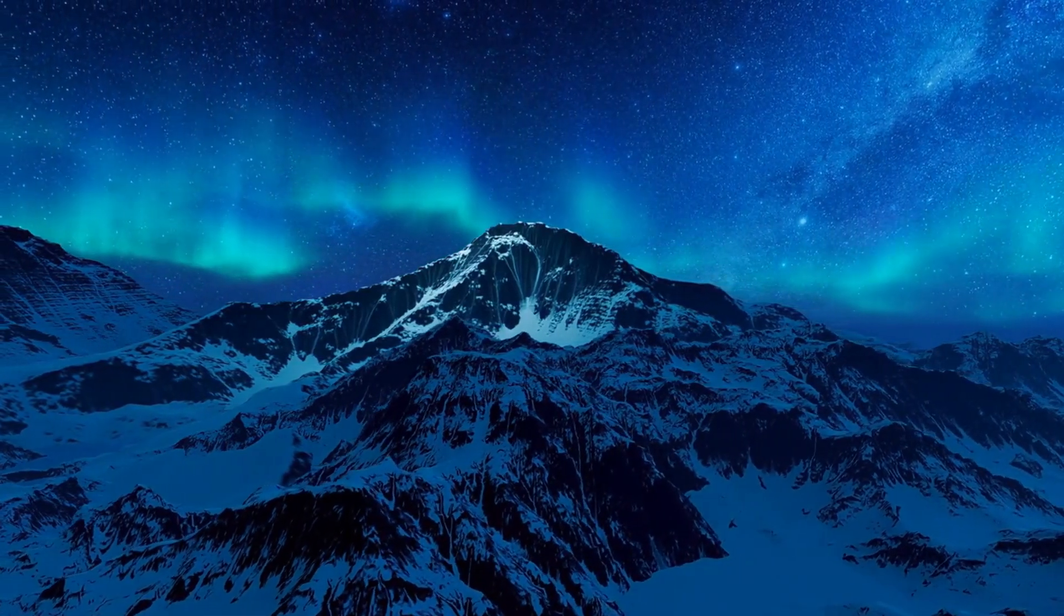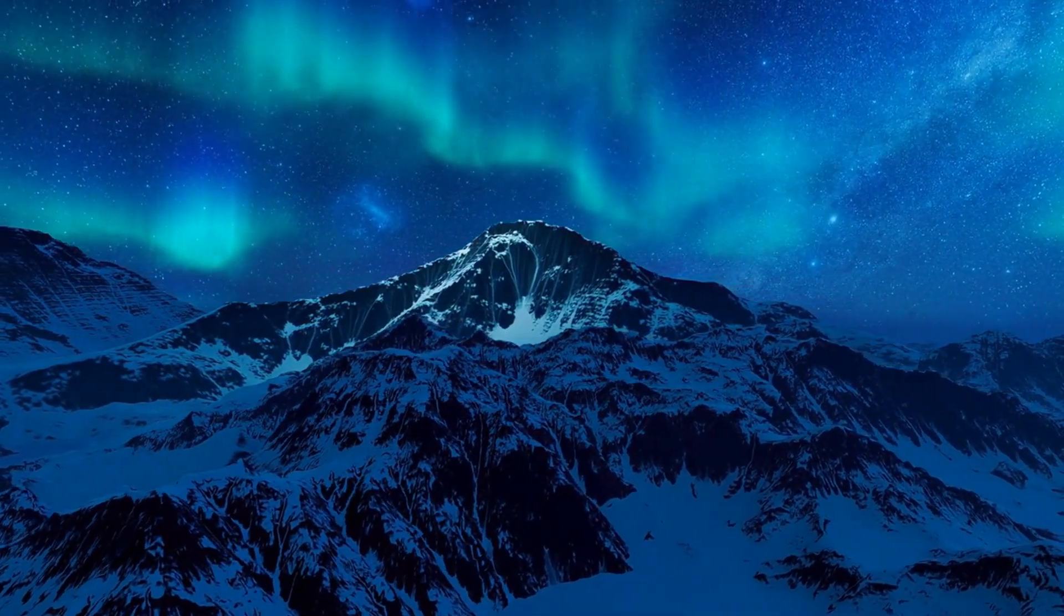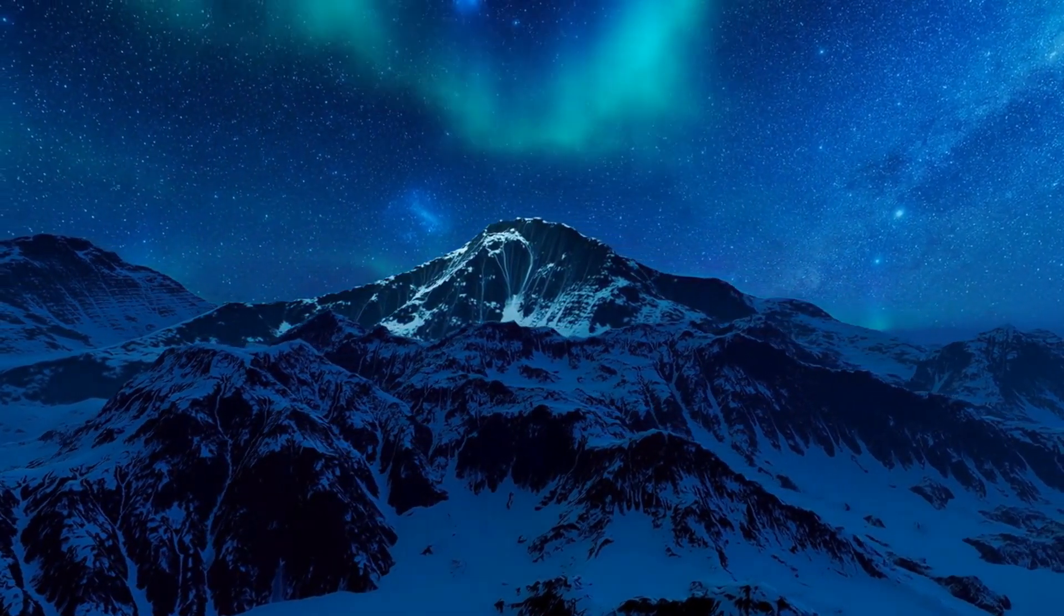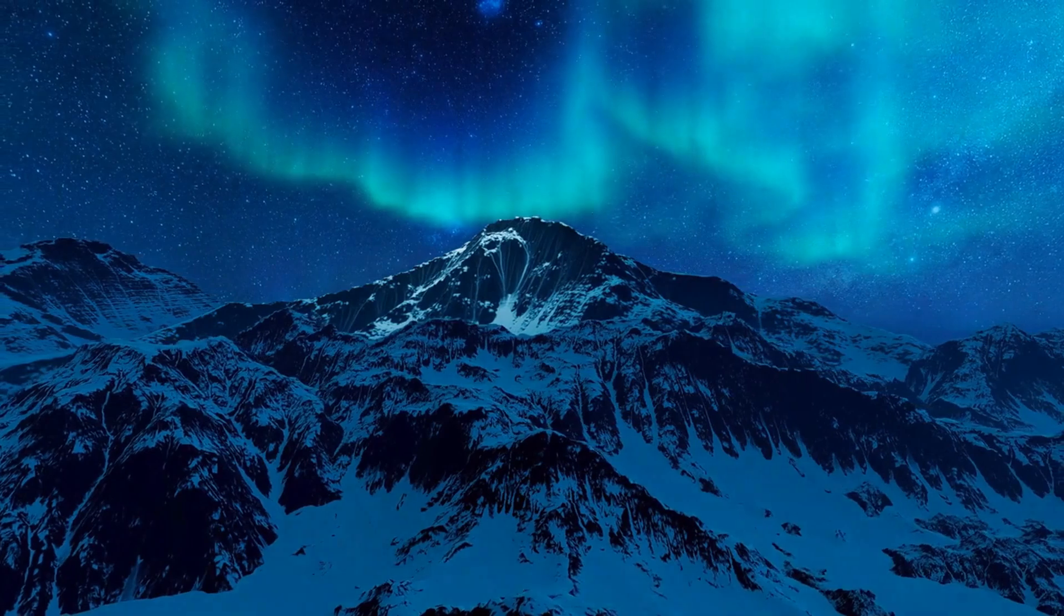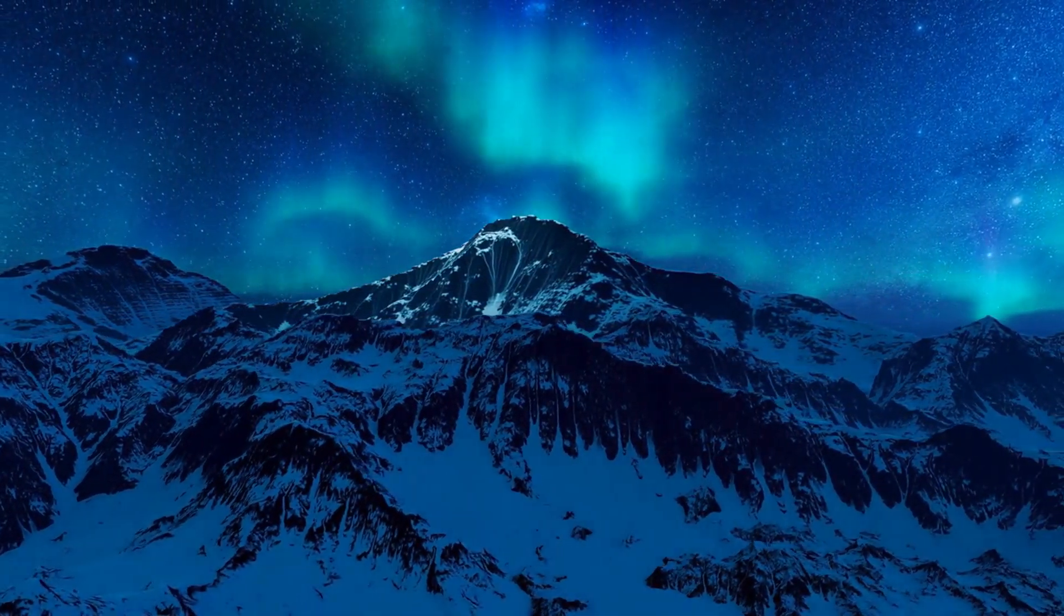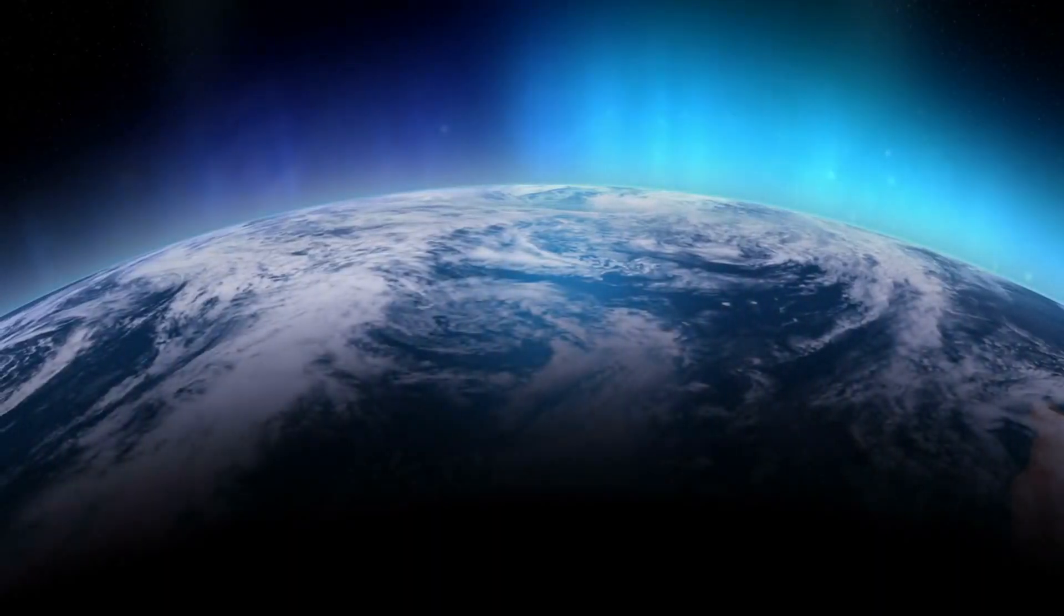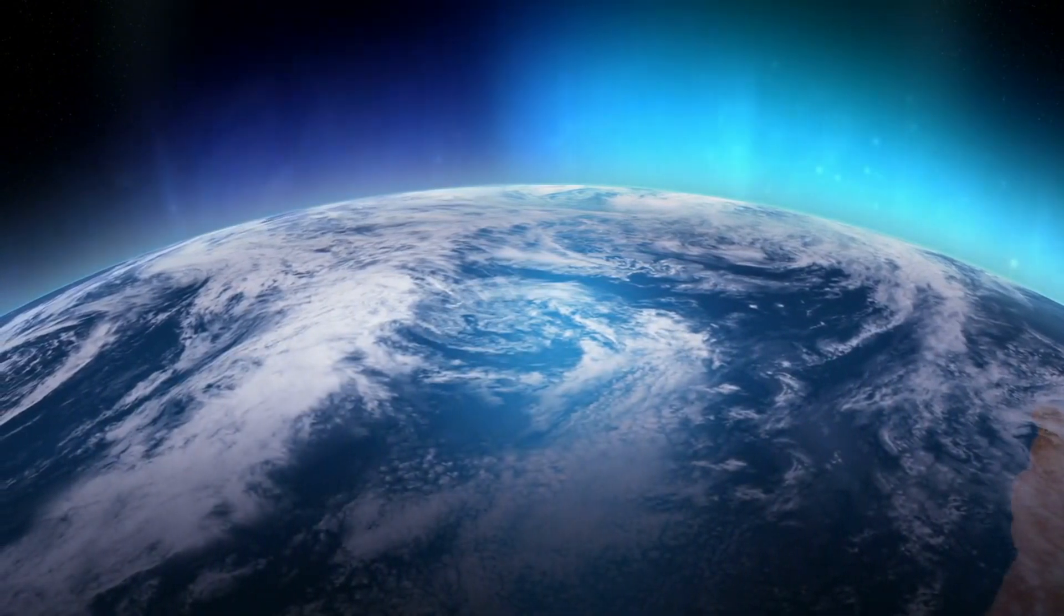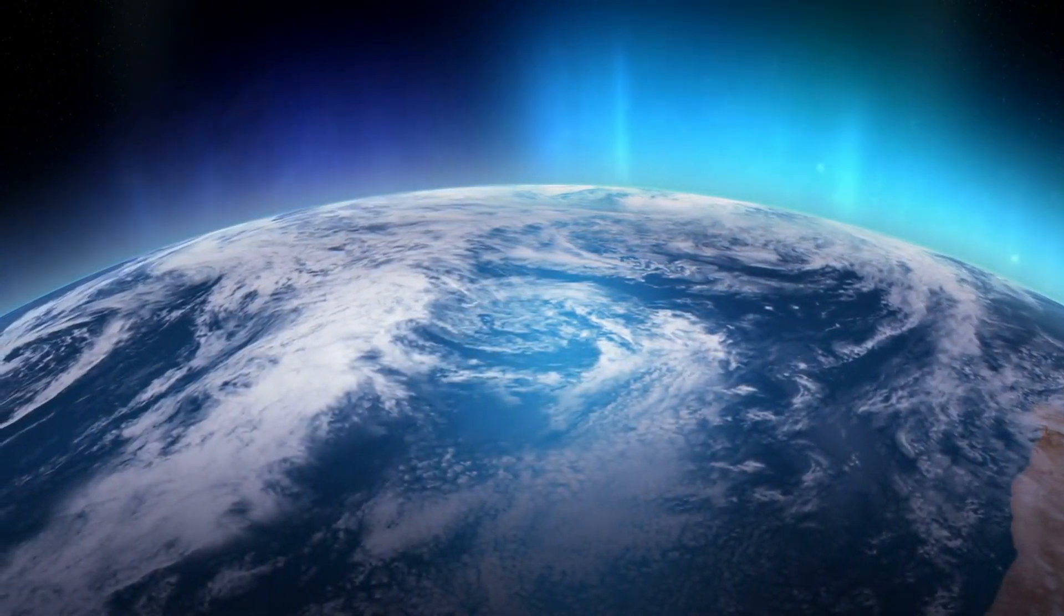You've probably seen the northern lights, those beautiful curtains of green, red, and violet dancing over the poles. But what if I told you those lights are just the visible tip of a massive cosmic circuit? In this video, we're going to look at Birkeland currents, something you may have heard of, but maybe don't quite yet understand.